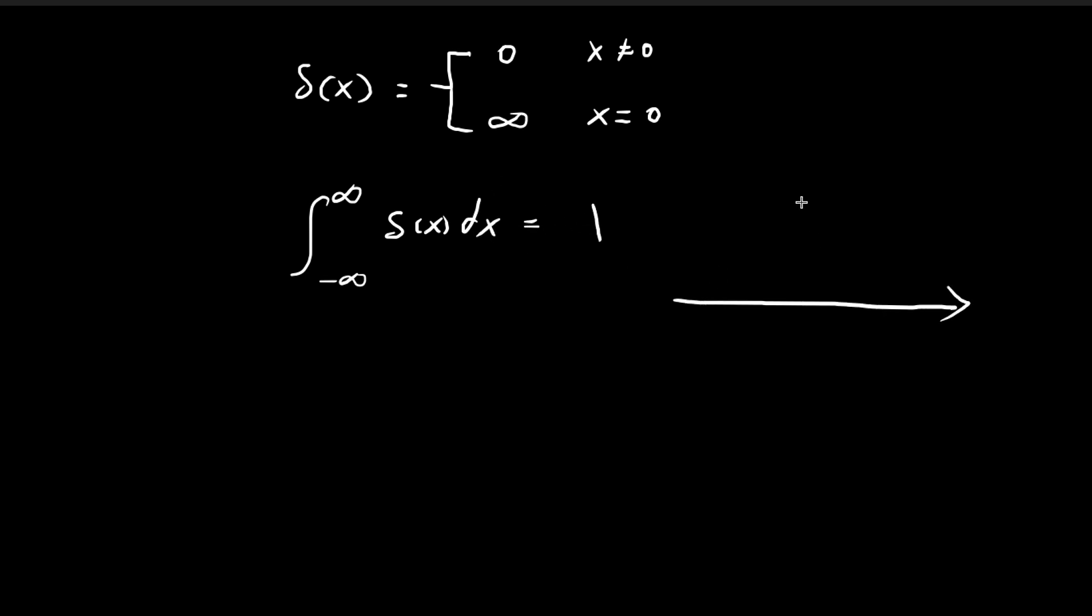You can imagine the Dirac delta function as an infinitely sharp spike. When x is not equal to 0, in all these regions, the function equals 0. Right at this point, it shoots up into an infinitely tall spike, always bound by this constraint. Notice that if we follow this definition,